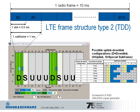Looking at uplink-downlink configuration 0 as shown in the screenshot: the 10 subframes are represented, where subframe 0 is a downlink subframe according to the table. The green part shows that user data in the downlink is carried there. Subframe 5 is also carrying downlink data again.